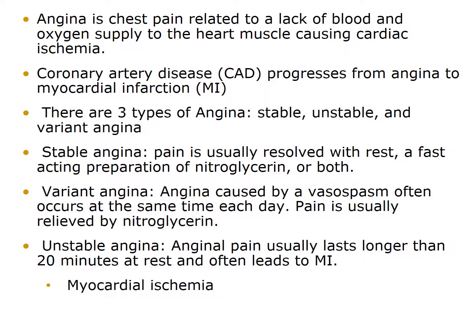If it continues, it will lead to a myocardial infarction, and we don't want that. So there are three different types of angina: stable, unstable, and variant. Stable angina is usually resolved with rest and a fast-acting preparation of nitroglycerin. Variant angina is caused by vasospasms, often occurring at the same time each day, and can be relieved with nitroglycerin. Unstable angina usually lasts longer than 20 minutes at rest and often leads to MI.